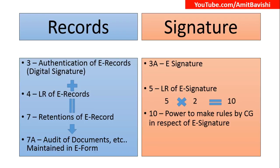Now, 3 plus 4 is 7. That is Section 7, which deals with retention of electronic records. So: Section 3 is for authentication, Section 4 is for legal recognition, and 3 plus 4 equals 7, which is retention.